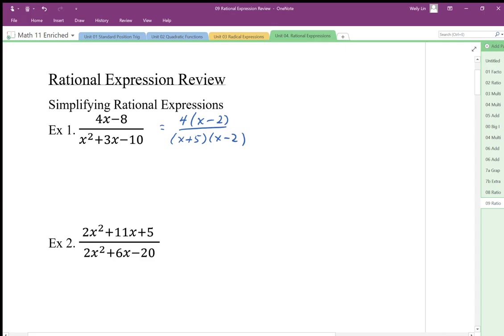We should always be aware of dividing by 0. So our restrictions are going to be x is not equal to negative 5, x is not equal to positive 2. We have to state restrictions before we cancel.